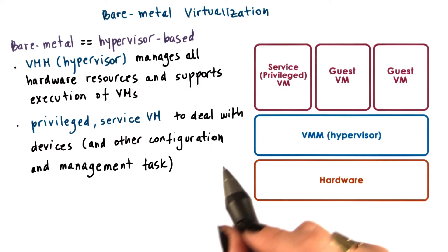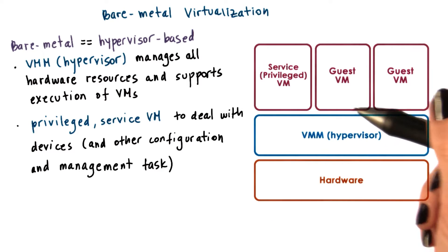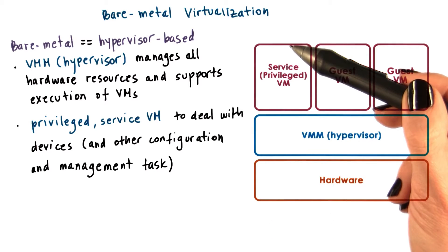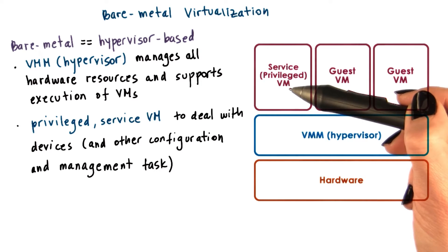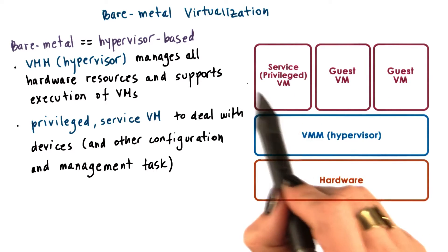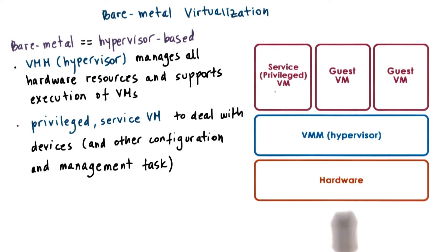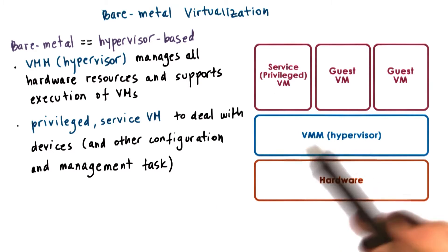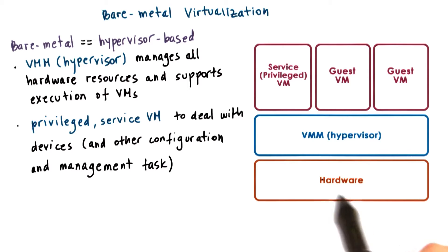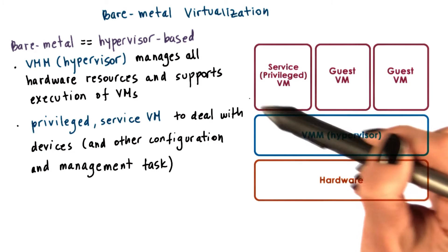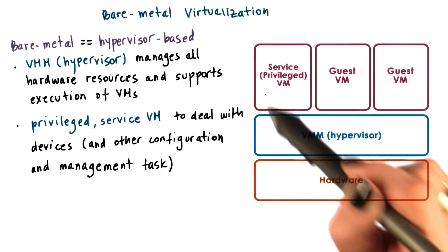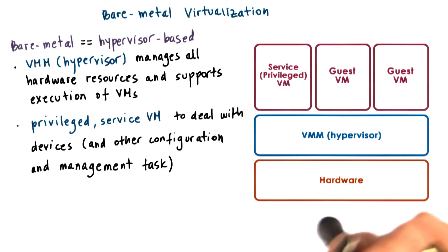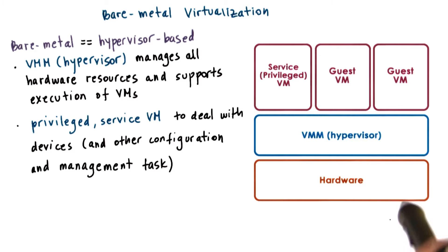To eliminate this, the hypervisor model typically integrates a special virtual machine — like a service VM — that runs a standard operating system and has full hardware privileges to access and perform any kind of hardware manipulation, just as if you ran natively on the hardware. It is this privileged VM that would run all of the device drivers and have control over how the devices on the platform are used.